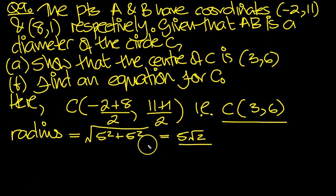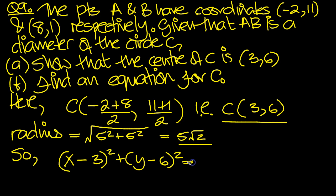So the equation for C then, the equation is (x minus the x-coordinate, which is 3) squared, plus (y minus the y-coordinate, which is 6) squared, is equal to r squared, which is 50.